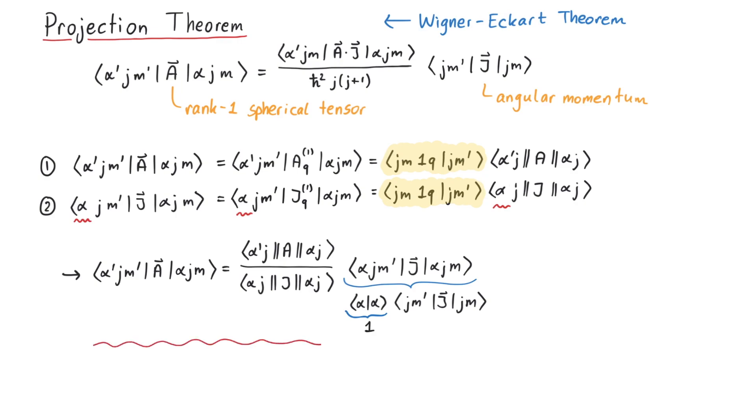Now, this is already a quite interesting result. It tells us that the matrix elements of any vector operator A are given by some number times the expectation value of angular momentum.